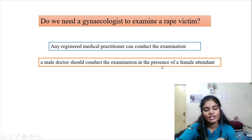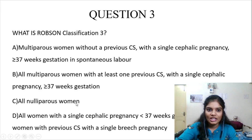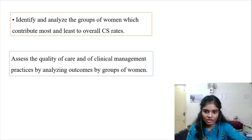Question number 3: What is Robson classification 3? This is a confusing classification. WHO divided pregnant women delivering into 10 groups (1 to 10), to identify which group contributes most — and which least — to caesarean section rates. This allows assessment of which hospital provides good quality clinical management and care.